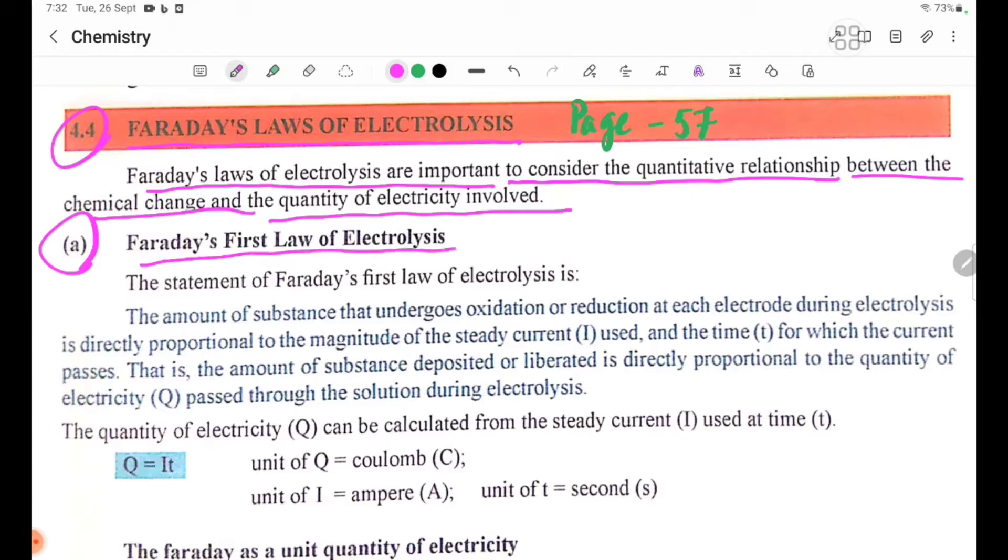Faraday's First Law of Electrolysis: The amount of substance that undergoes oxidation or reduction at each electrode during electrolysis is directly proportional to the magnitude of the steady current I used and the time for which the current passes.